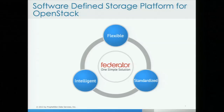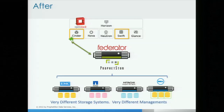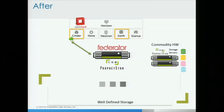What we are trying to do is to provide a flexible, intelligent, and standardized federator for managing all the storage systems for OpenStack. This is the after. Down here, you can see many different kinds of storage systems. With our federator, what we are trying to do is come up with a single entrance into OpenStack, and through the federator, we will be able to embrace all the storage systems. In addition to that, we have a way of making commodity hardware — which is x86-based — and putting our storage server software into that commodity hardware. We can turn that into a very intelligent storage that will work natively with our federator. With this in mind, this becomes a well-defined storage system for OpenStack.